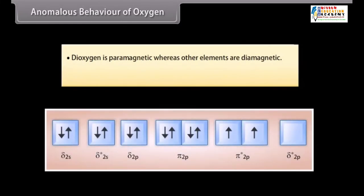Dioxygen is paramagnetic whereas other elements are diamagnetic. It is gas at ordinary temperature whereas the other members are solid.